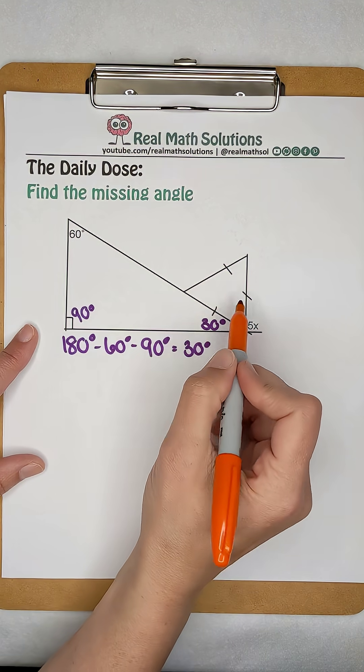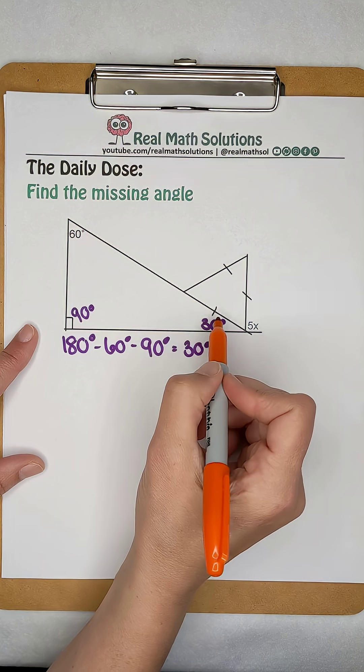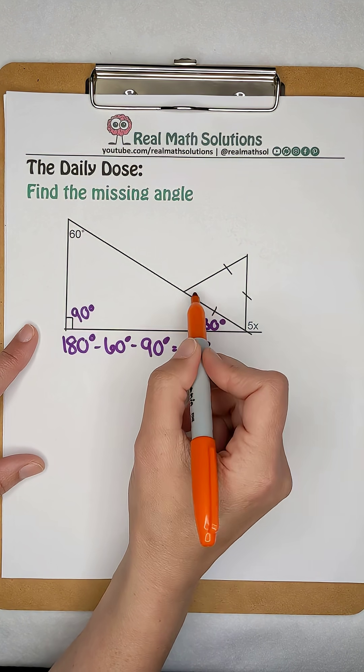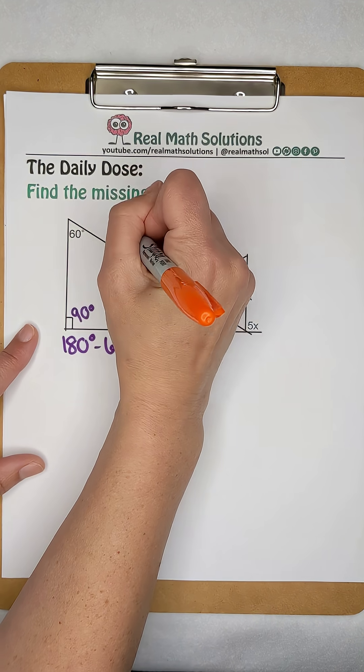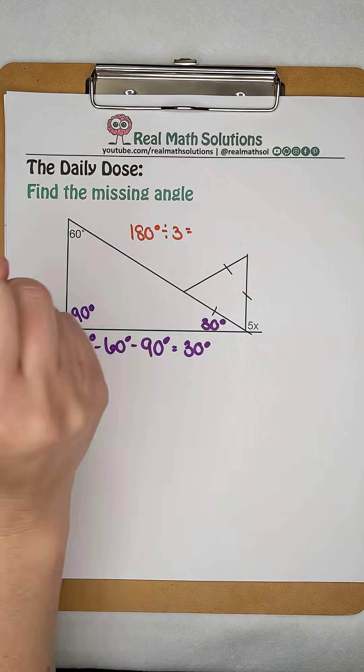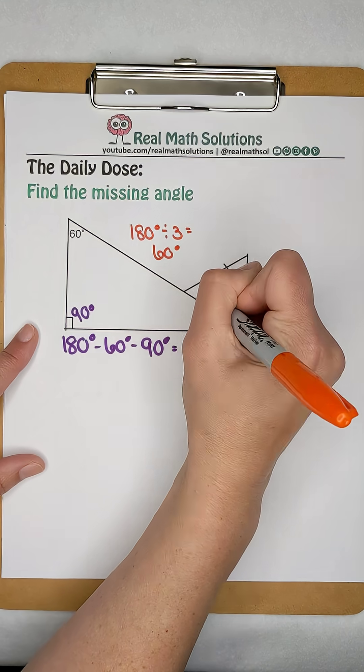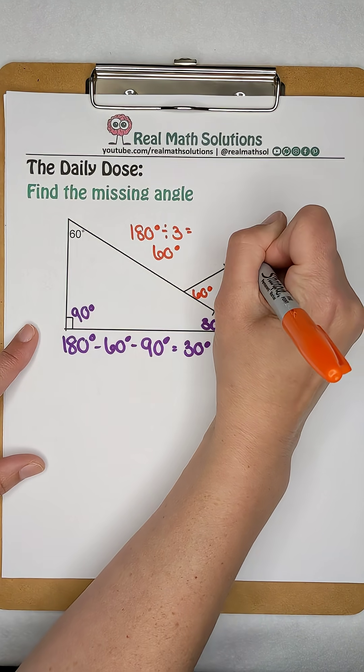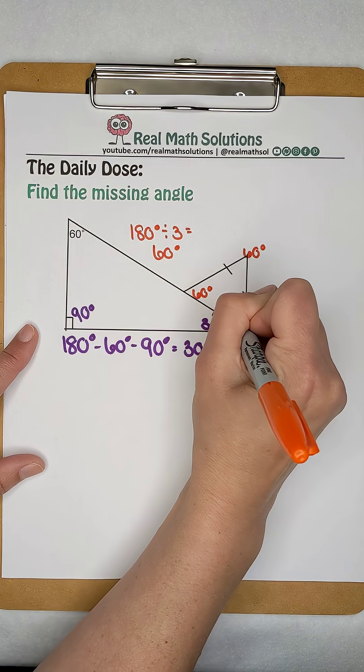This triangle is equilateral because all its sides are labeled to be equal. If all the sides are congruent, that means all the angles are congruent. We can take the 180 degrees that make up a triangle and divide it equally amongst those three angles. So each of these angles in this triangle are worth 60 degrees.